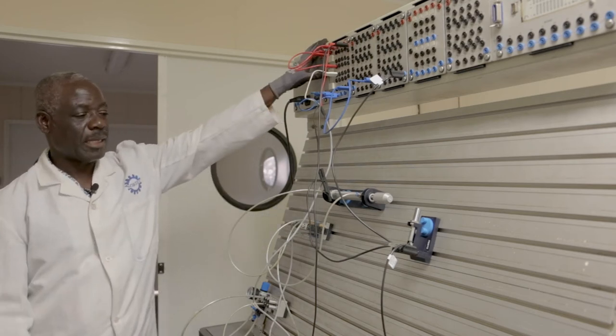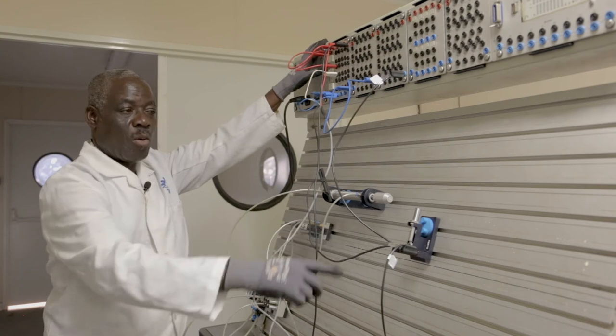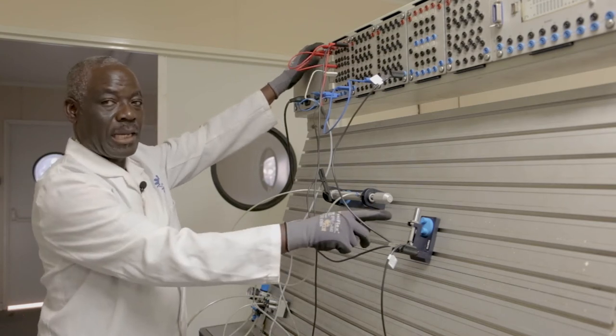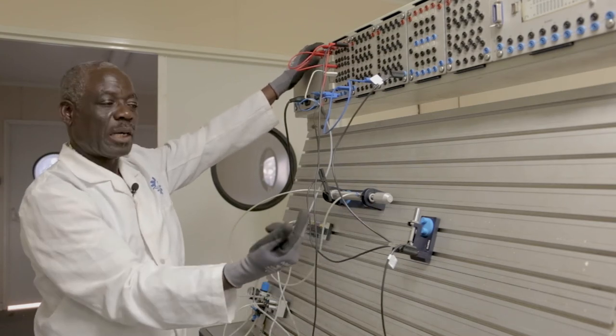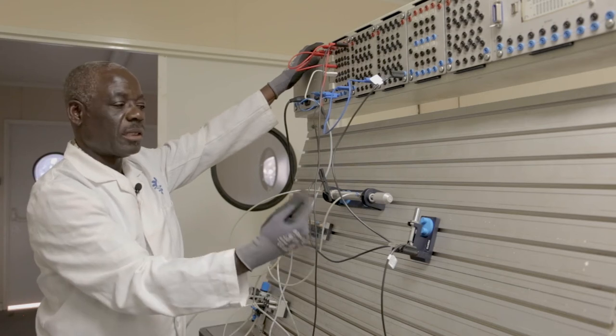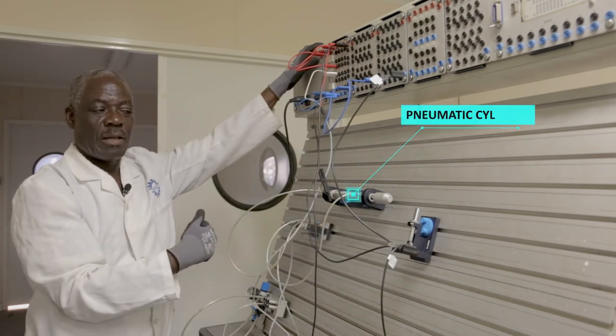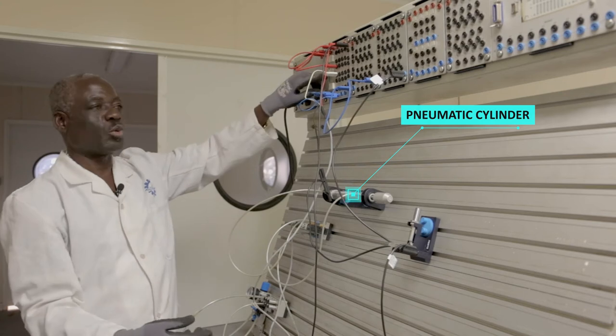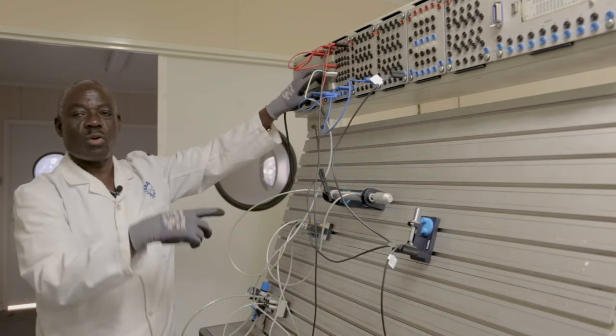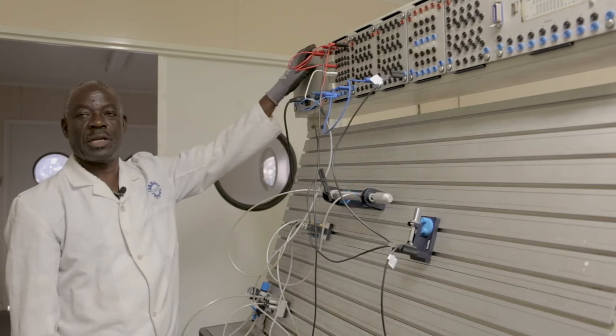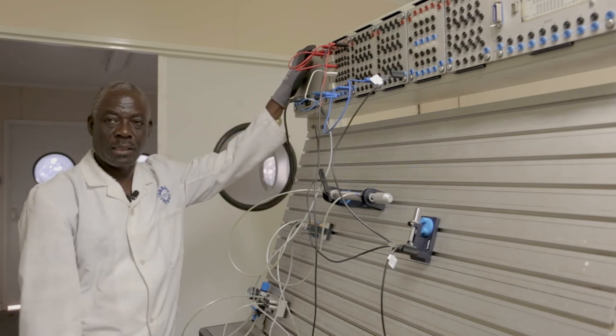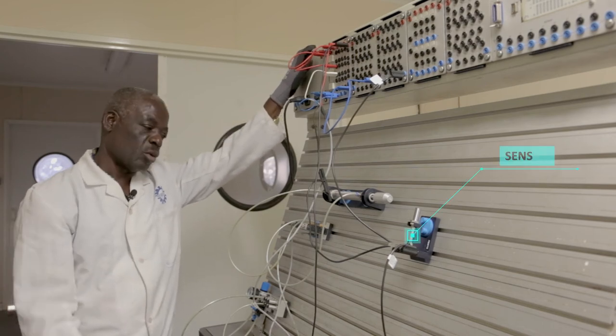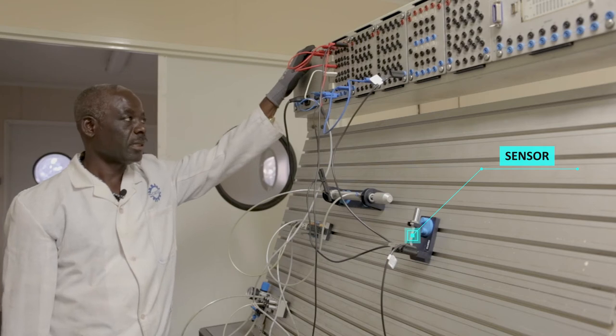If I press the button here, the cylinder will extend. When it reaches the sensor here, the sensor will connect it to return the cylinder inside. If I wanted, I would have used the two switches to press it to go out, again to press it to go in. But now I'm applying the sensor here, which will help us handle it.